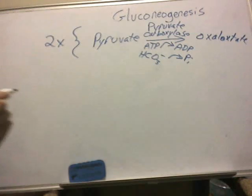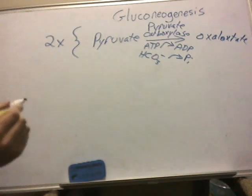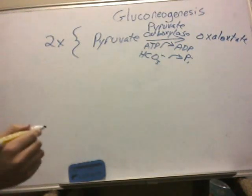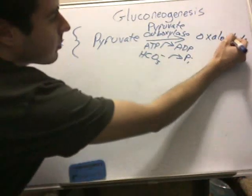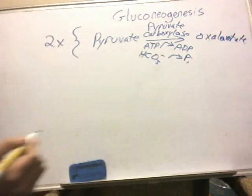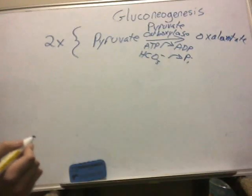So oxaloacetate — let me spell that correctly — oxaloacetate can also be used as a precursor for some amino acids.